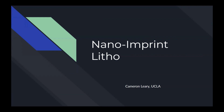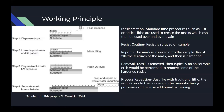Hello and welcome to this lecture on nanoimprint lithography. The basic process begins with a master mask made using some form of traditional patterning and etching manufacturing process. Nanoimprint lithography's unique advantage is that this mask is only patterned once, using more expensive and complicated processes like electron beam lithography or optical lithography, and then can be used to pattern a wafer thousands of times without the need of these machines.